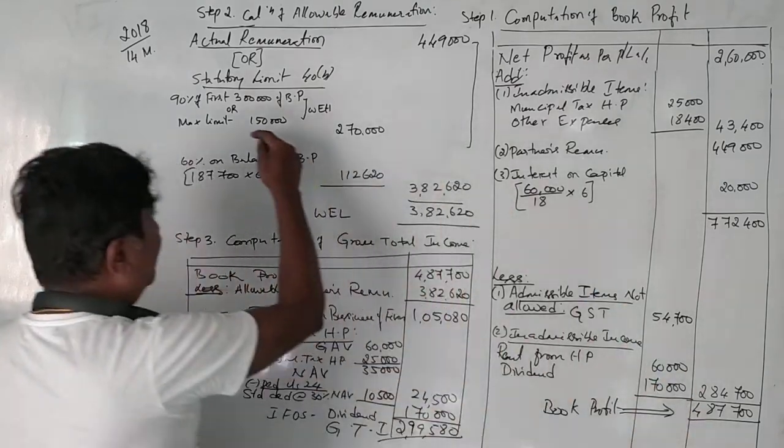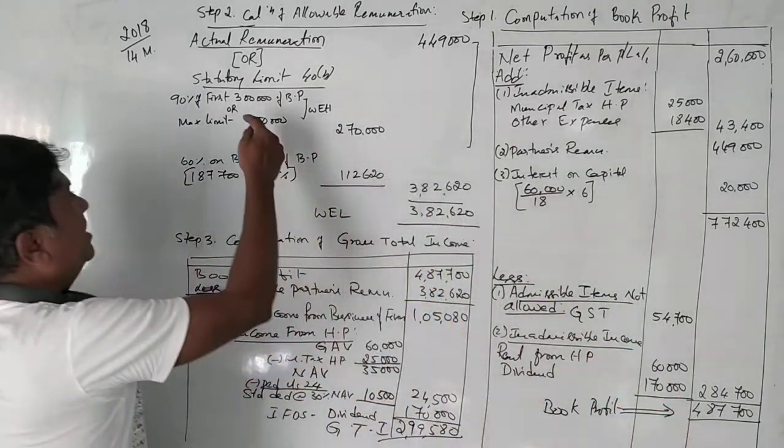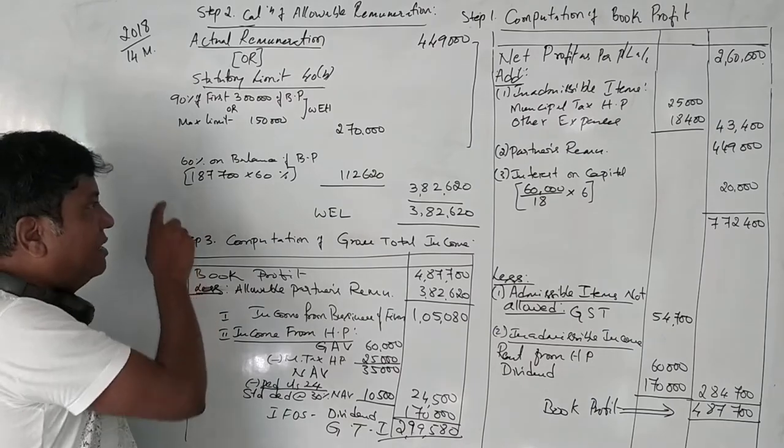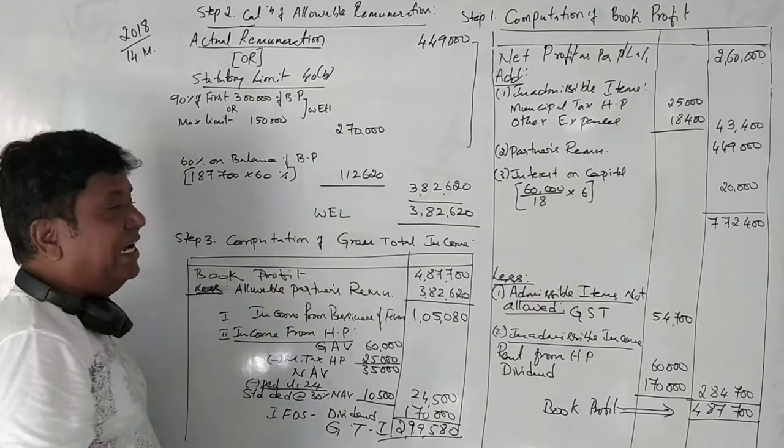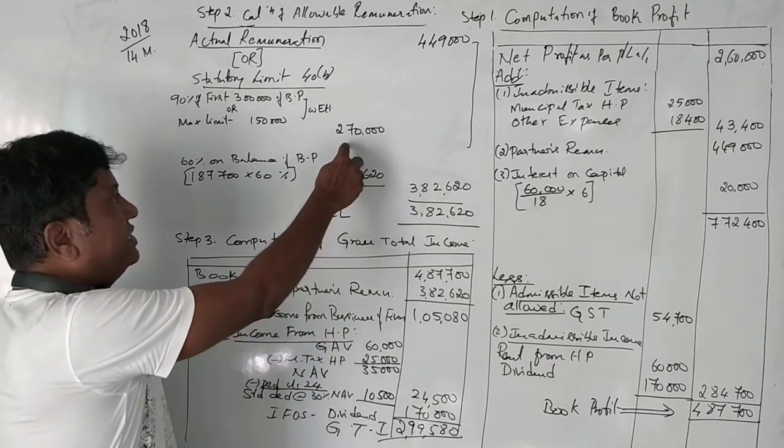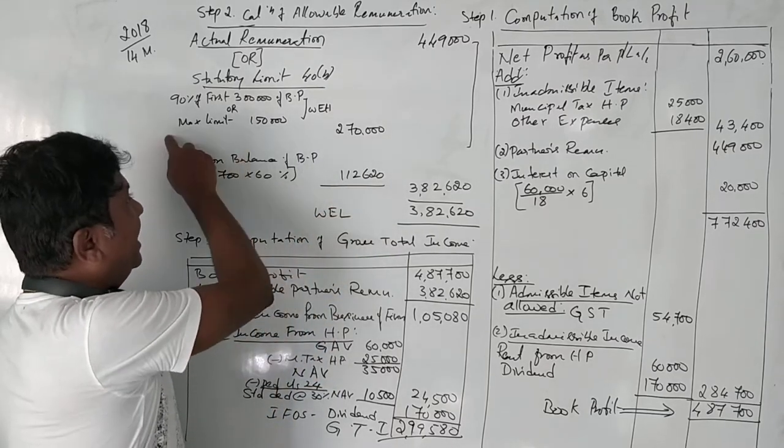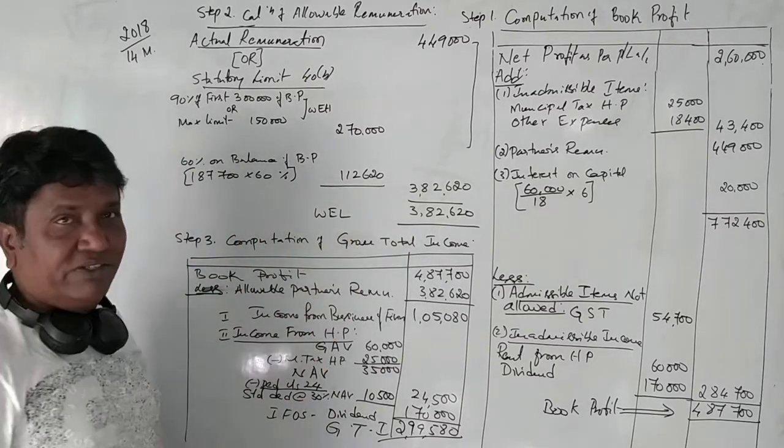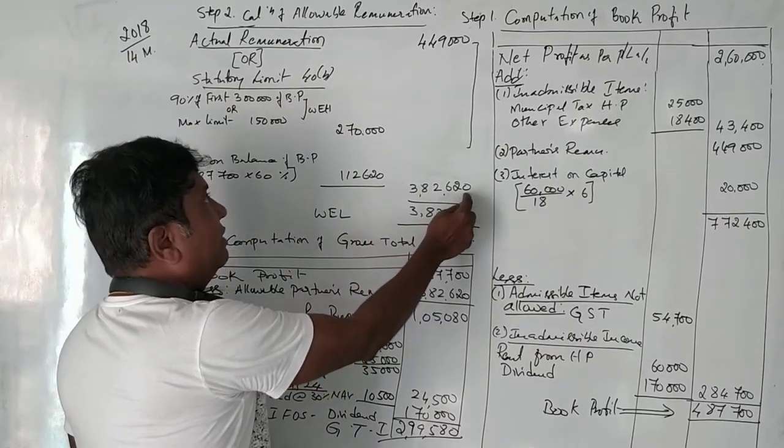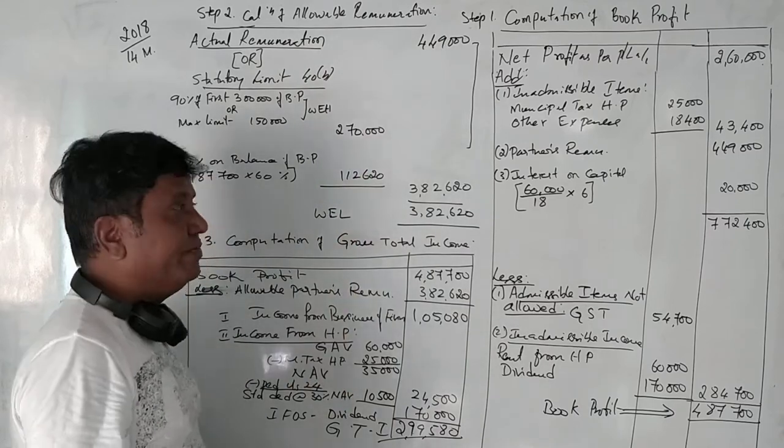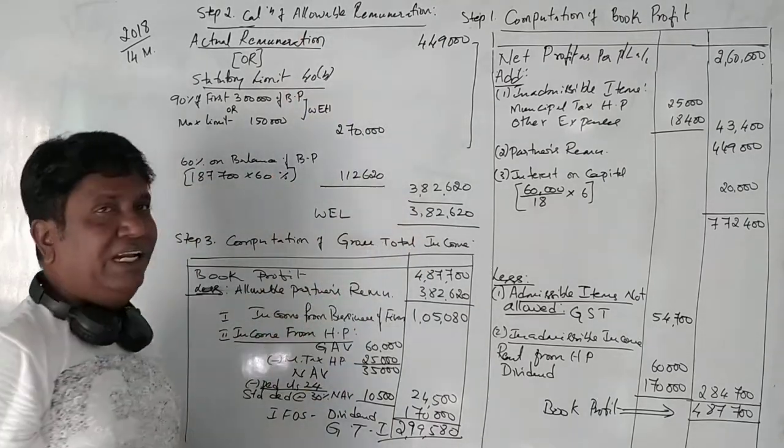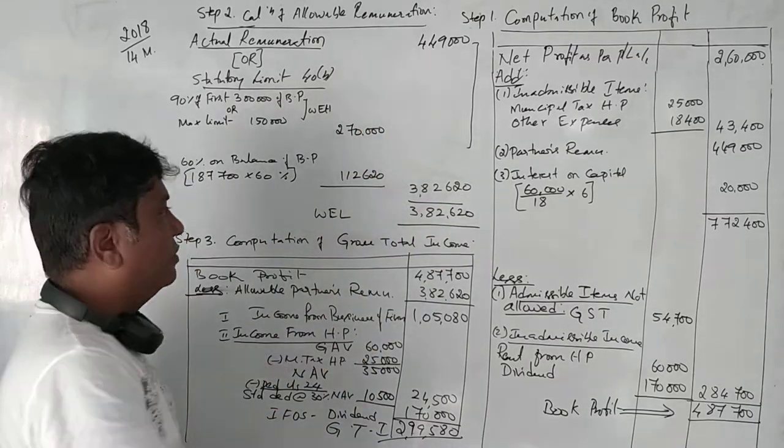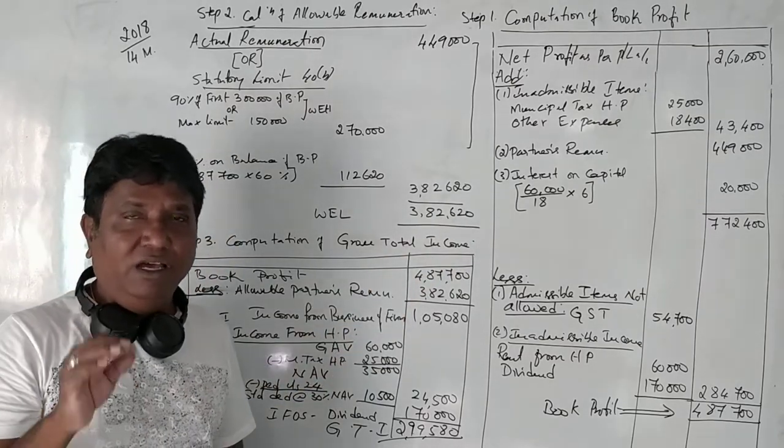On the balance of the book profit, on 4,87,700, if you deduct 3,00,000 rupees, the rest of the amount is 1,87,700. On that, 60% we need to calculate. 60% is 1,12,620. Now, 2,70 and 1,12,620, 90% of first 3,00,000 and 60% of the balance of book profit, which comes to 3,82,620. This 3,82,620 will be compared with the actual remuneration. Whichever is lower is an allowable remuneration. Which is lower is 3,82,620. So therefore, this amount is an allowable remuneration.